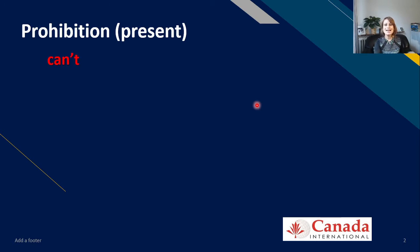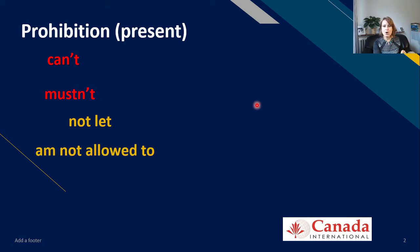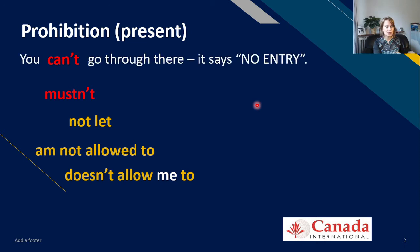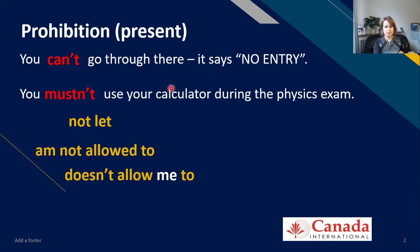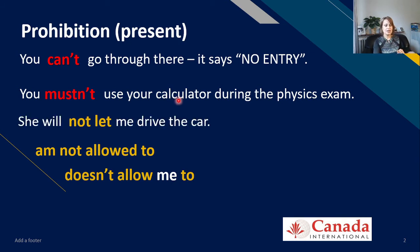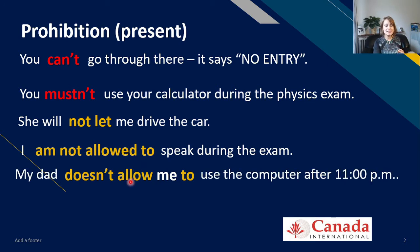Can't and mustn't are the modal verbs for prohibition in the present tense. The phrases are: not let, to be not allowed to, and don't or doesn't allow somebody to. For example: 'You can't go through there, it says no entry.' 'You mustn't use a calculator during the physics exam — it is forbidden.' 'She will not let me drive the car.' 'I'm not allowed to speak during the exam.' 'My dad doesn't allow me to use a computer after 11 pm.'